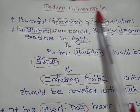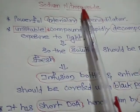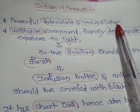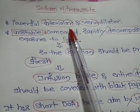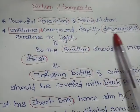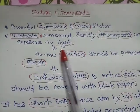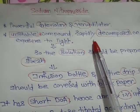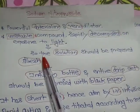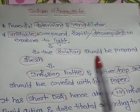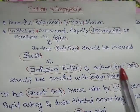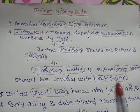We will discuss sodium nitroprusside. It is a powerful arteriolar and venodilator. It is an unstable compound which rapidly decomposes on exposure to light. Therefore, the solution should be freshly prepared, and the infusion bottle and the entire drip set should be covered with black paper.